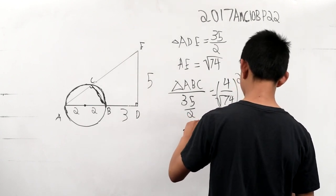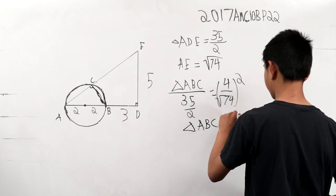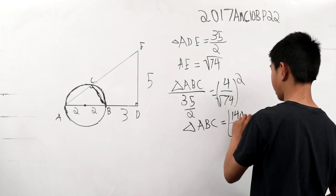And so triangle ABC, when solving for the area, is simply 140 37ths. And that is our answer.